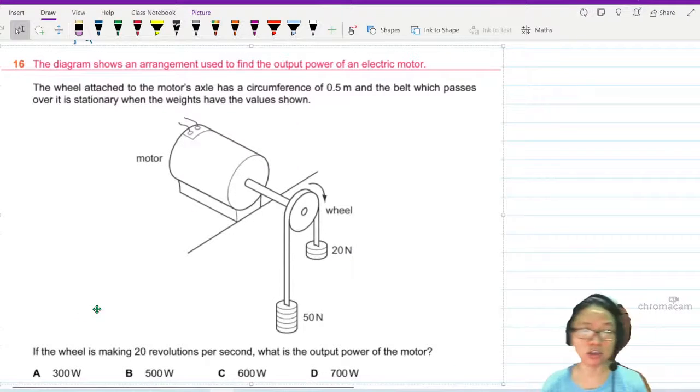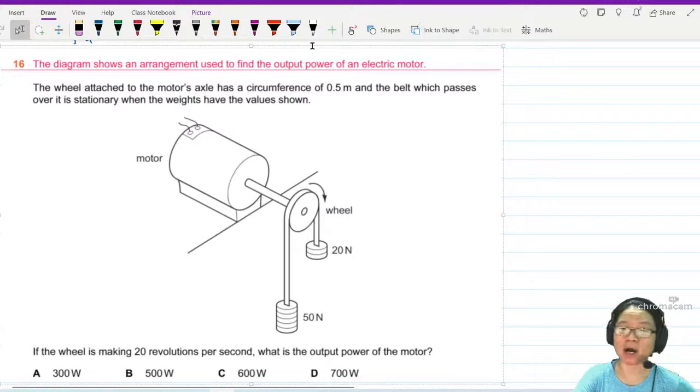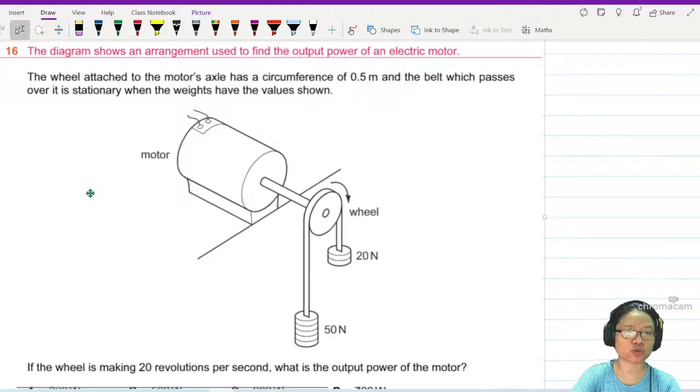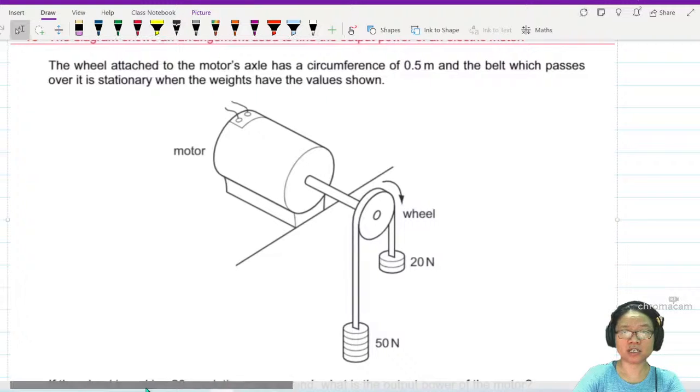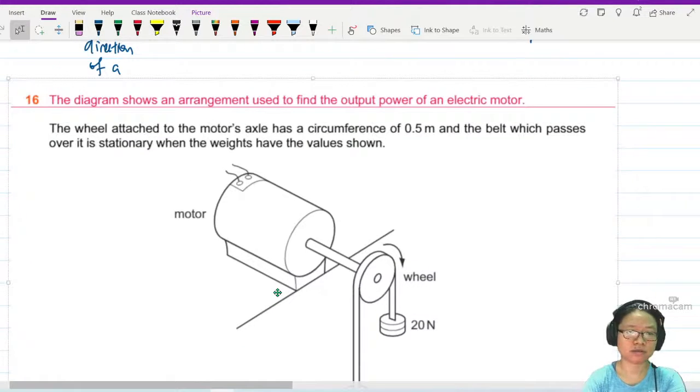Diagram shows an arrangement used to find the output power of an electric motor. The wheel attached to the motor axle has a circumference of 0.5 meter. This is also a pulley.